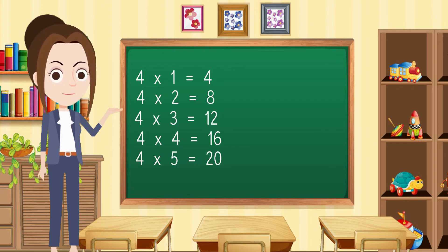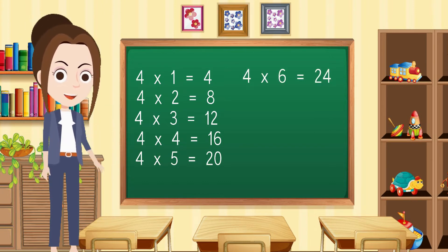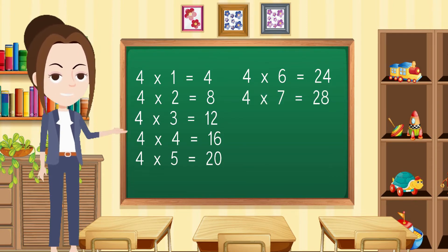Four fives are twenty. Four sixes are twenty-four. Four sevens are twenty-eight.